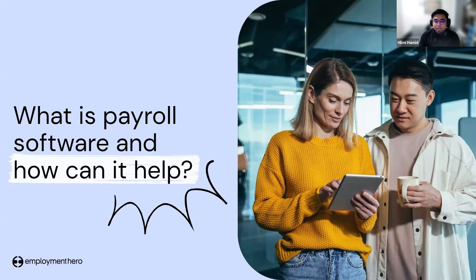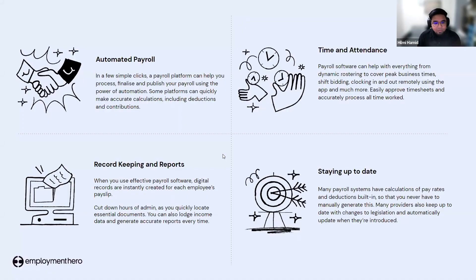So what is payroll software and how can it help HR and payroll admins streamline the process? At Employment Hero, our objective is to make employment easy. We want to make sure the entire process — from onboarding to offboarding your employee, calculating your pay run, and managing statutory contributions — is as easy as possible. With a few simple clicks, we hope to help you process, finalize, and publish your payroll using the power of automation.